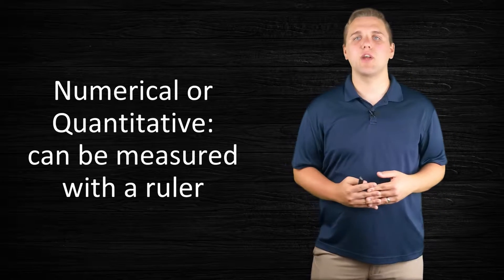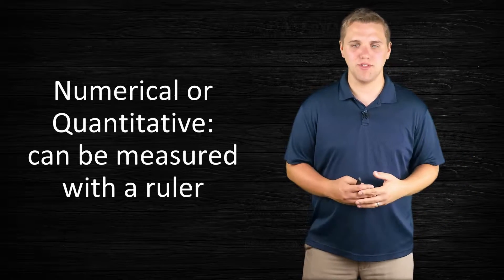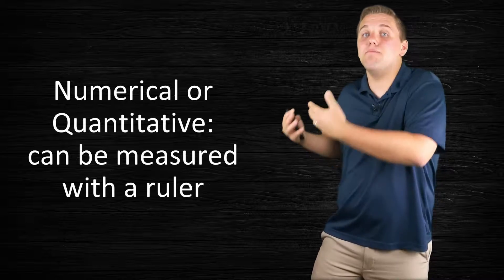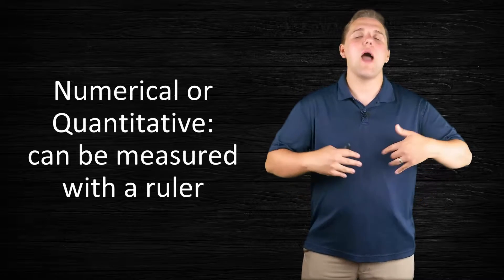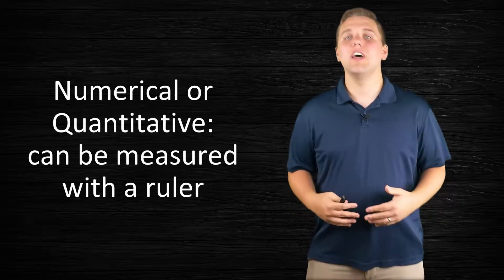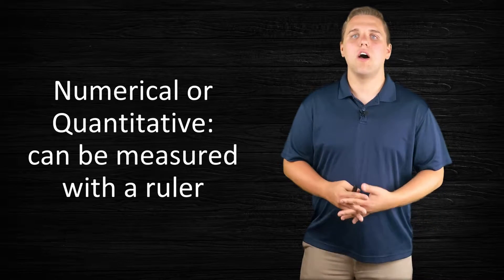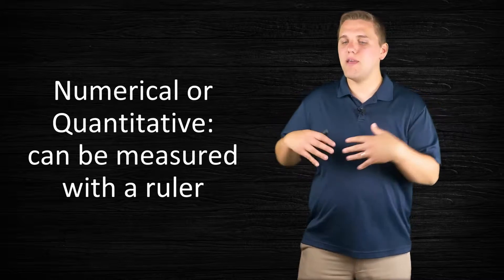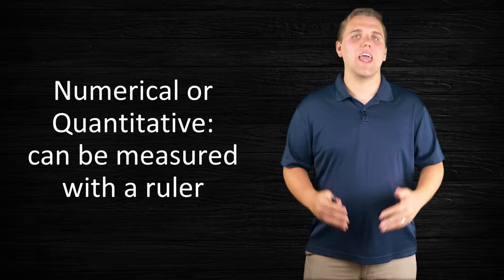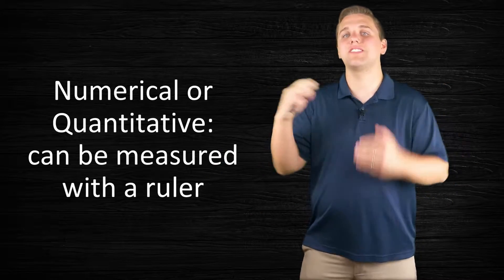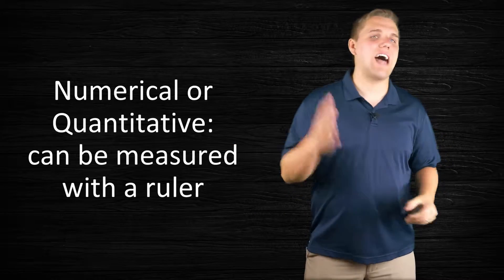The first category of variables are numerical variables. Some people refer to these as quantitative variables. These are variables that can be measured with a ruler. And by ruler, I don't mean the 12-inch ruler that you're thinking of. I'm talking about a unit—like speed in miles per hour, height in inches, volume, or age. These are things that can be measured in some time, space, or size, whatever the case might be. Numerical variables are variables that you can slap a unit on.